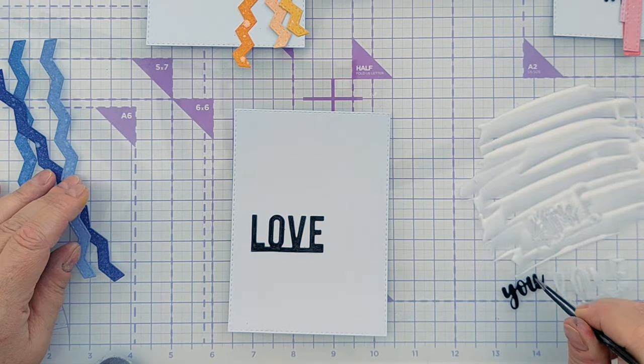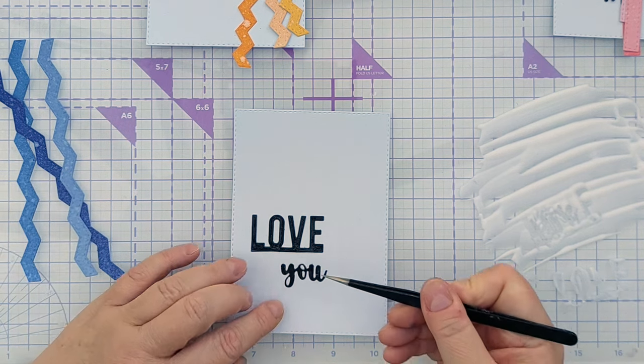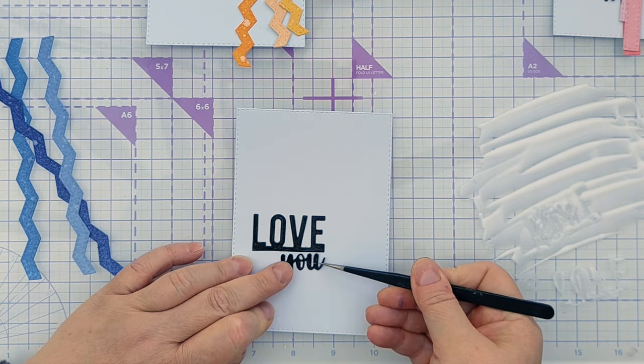And now I've got the U, the other part of the sentiment. I'm doing the same thing. I'll just offset that underneath like that.